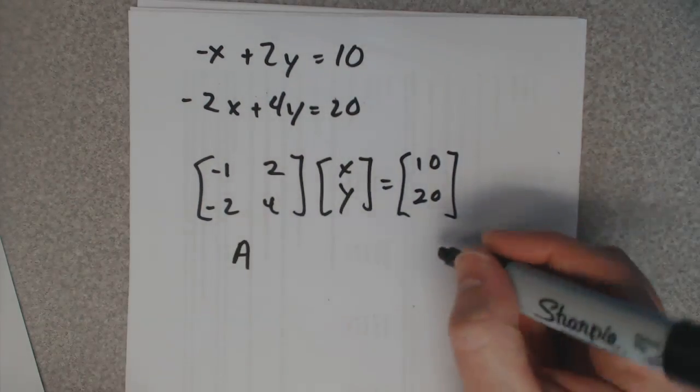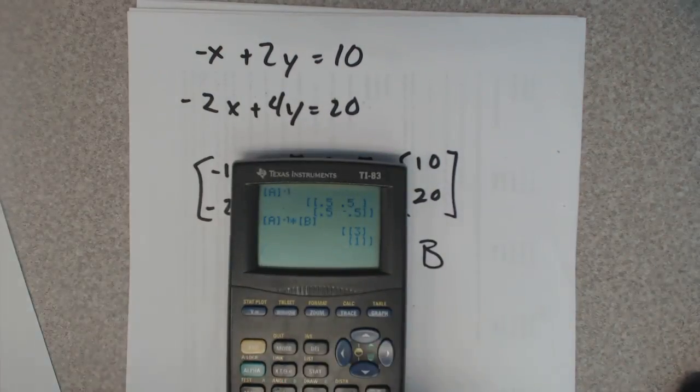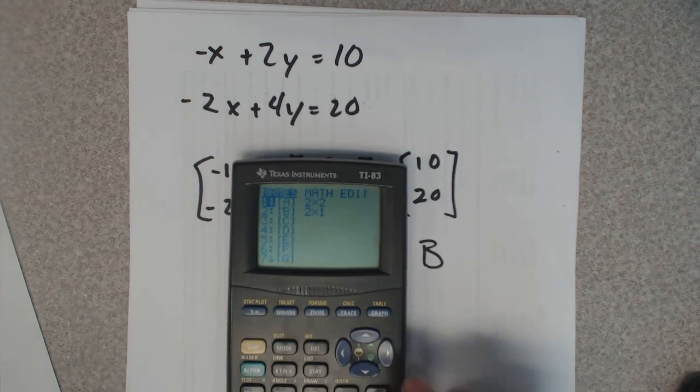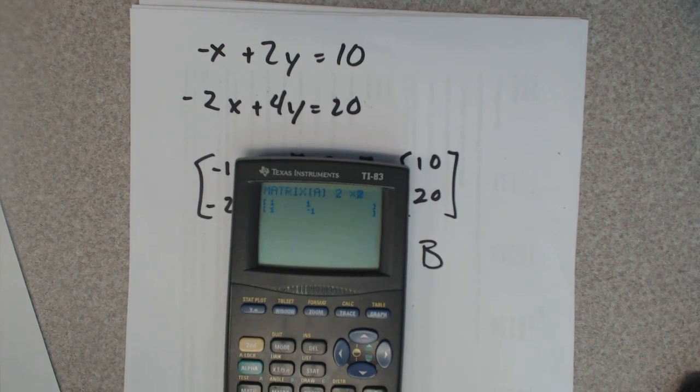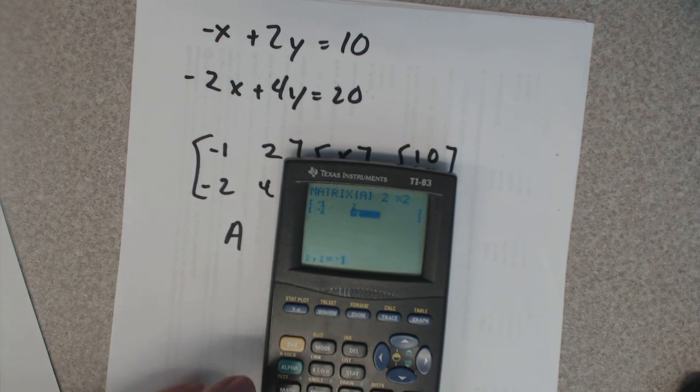Let's figure out what A is, the inverse of A. It's 2 by 2. Negative 1, 2, negative 2, 4.